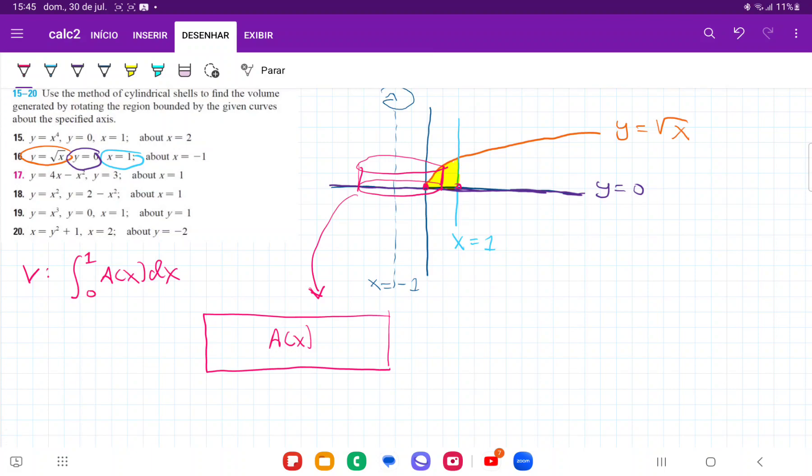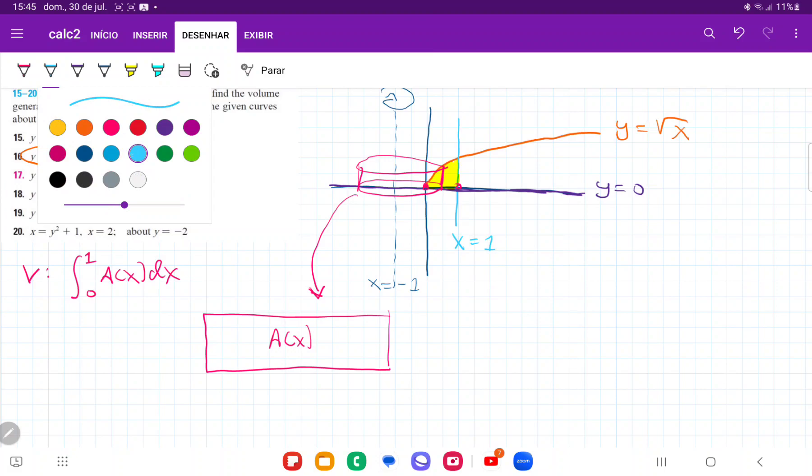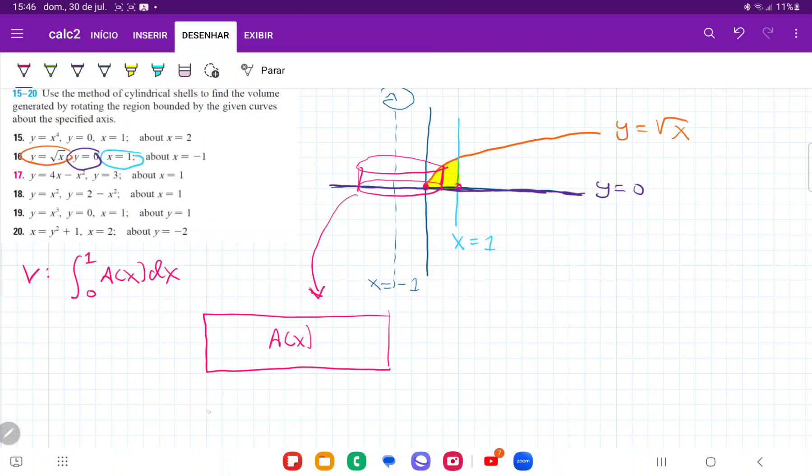So the thing that we have to do is we have to express this area as a function of x because then we're summing them up. So the first thing that we're looking at is this area here is given by base times height.